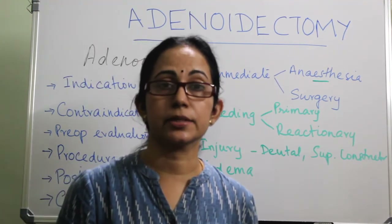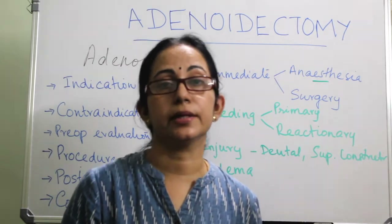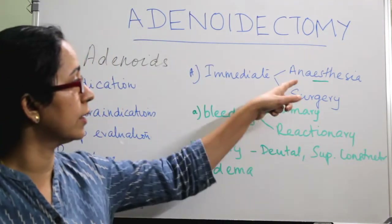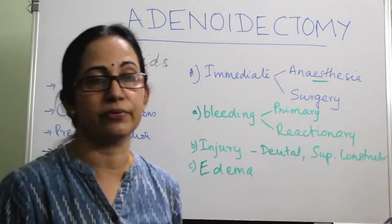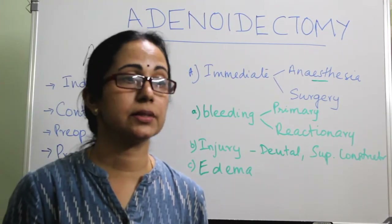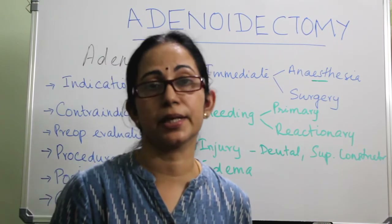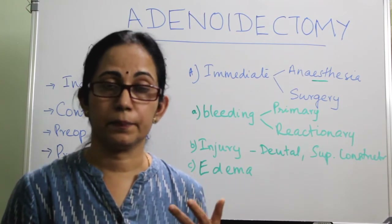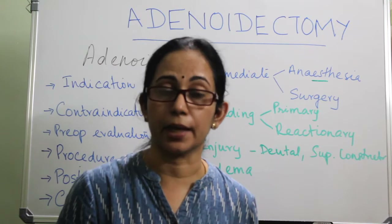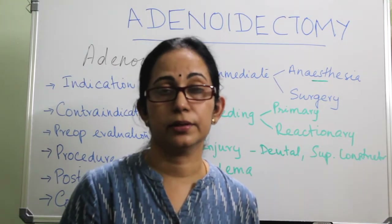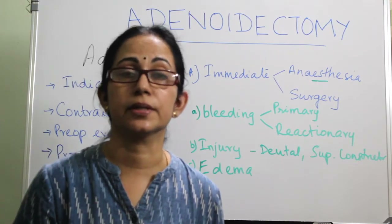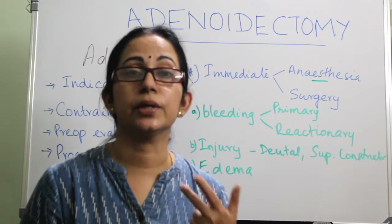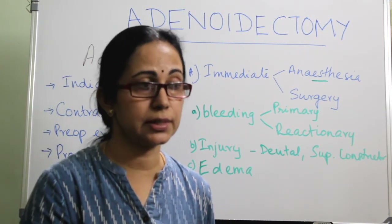The complications are divided into immediate and delayed. Immediate complications are further divided into those due to anesthesia and those due to surgery. Due to anesthesia: allergy to anesthetic drugs, anaphylaxis or cardiac arrest, difficult intubation, difficult extubation, and laryngeal edema — the anesthetist will manage these. During surgery, the commonest complication in any surgery is bleeding. Primary bleeding happens at the time of surgery; in adenoidectomy, the most common cause is remnant adenoid due to incomplete removal, so it should be removed.